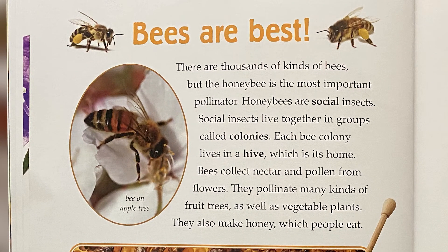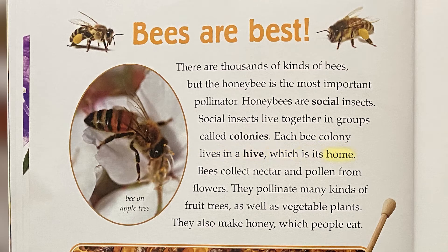Bees are best. There are thousands of kinds of bees, but the honeybee is the most important pollinator. Honeybees are social insects — social insects live together in groups called colonies. Each bee colony lives in a hive, which is its home. Bees collect nectar and pollen from flowers. They pollinate many kinds of fruit trees as well as vegetable plants. They also make honey, which people eat.